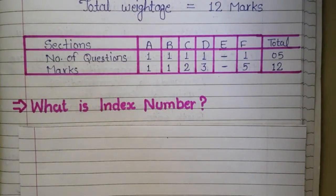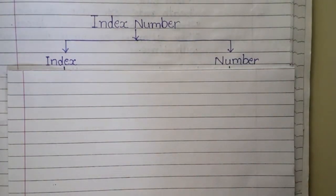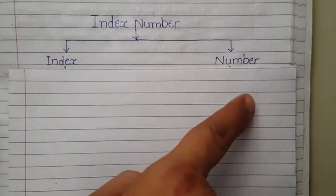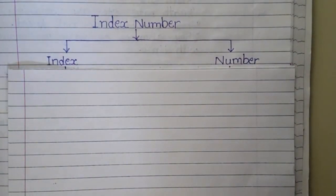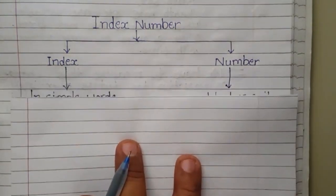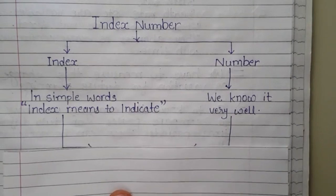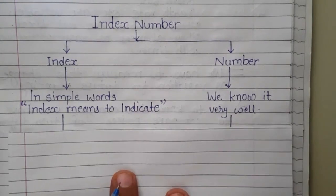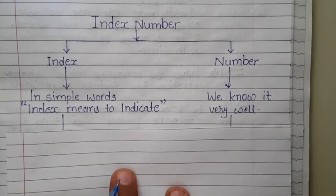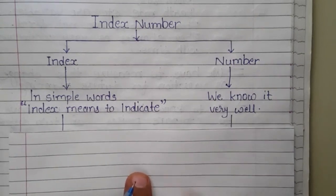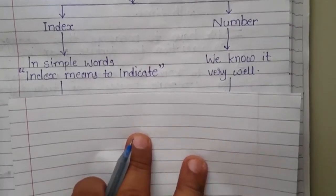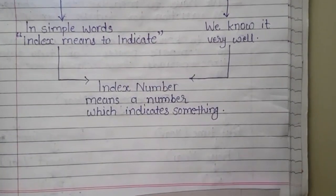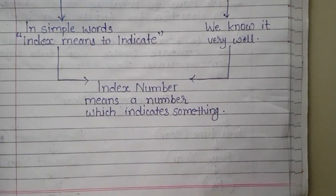By reading the name of this chapter, the first question that arises in our mind is: what is index number? To understand the meaning of index number, we divide the word into two parts — index and number. In simple words, index means to indicate something, and number means simple numbers. So index number means a number which indicates something.